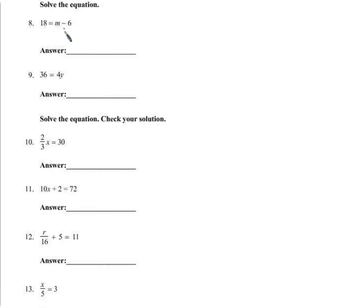Here you need to add 6 to both sides — a lot of you did that, did great. m equals 24. Here, since we have 4 times y, we divide both sides by 4, and 36 divided by 4 is 9.